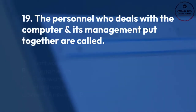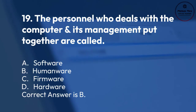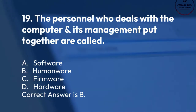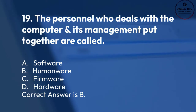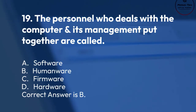Number 19. The personnel who deals with the computer and its management put together are called: A. Software. B. Humanware. C. Firmware. D. Hardware. Correct answer is B.